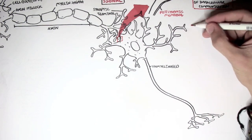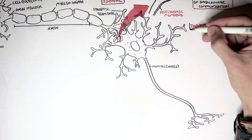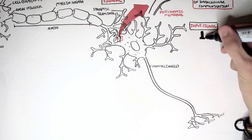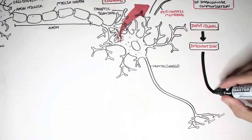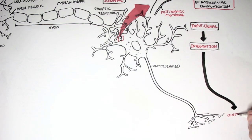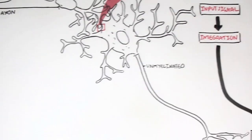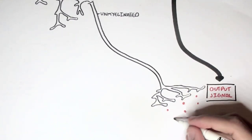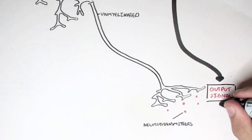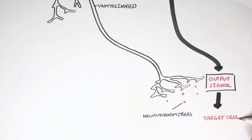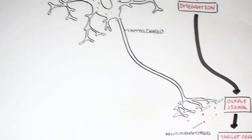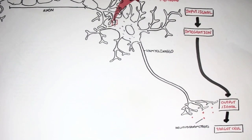So a new input signal is received by the dendrites. It will be integrated in the soma and then the action potential, the information will pass along the axon towards the terminal and will be passed on as an output signal via neurotransmitters that will target a particular cell. It can be a neuron again or it can be a muscle cell or an endocrine cell, any kind of cell, depending on where the neuron is located and what its desired response wants to be, what effect it wants to cause.